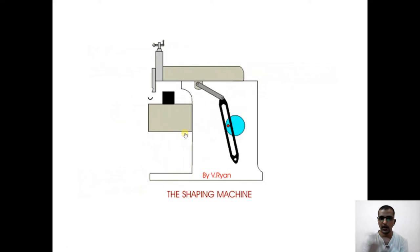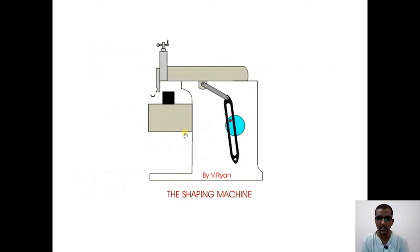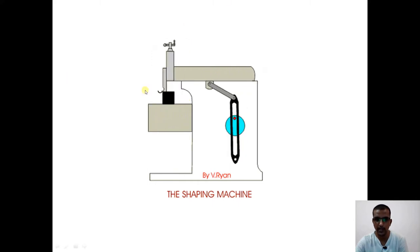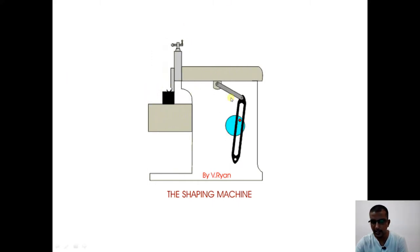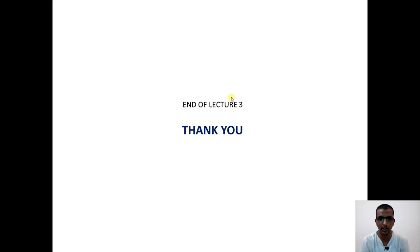We can observe the application of the crank and slotted lever mechanism in a shaping machine. In the forward stroke it removes material, and in the return stroke it comes back quickly to the initial position to begin the next cutting stroke. That concludes lecture 3 — we have completed all the quick return motion mechanisms. In subsequent lectures we will start with mechanisms that generate straight-line motion. Thank you.